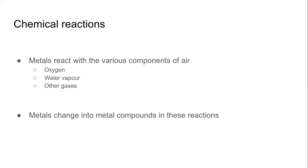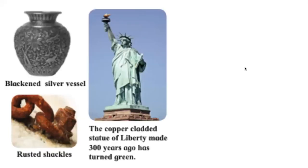We have all seen this in real life, with multiple examples. One instance we have even studied in detail in chapter number 3 — chemical reactions and equations — which is rusting of iron. If this goes on for a long time, the strong iron will just break. Another thing most of us have seen is how utensils or ornaments made of silver become black after some time. This is also corrosion — corrosion of silver.